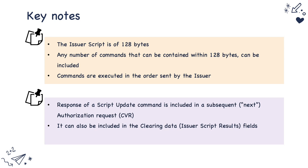How does the issuer know if the issuer script was successfully executed? The response of a particular script update process is included in the next authorization request in the card verification results (CVR) field, or it is included as part of the clearing data in the issuer script results field. So the issuer can find out either in the subsequent authorization via the CVR field, or in the clearing file.